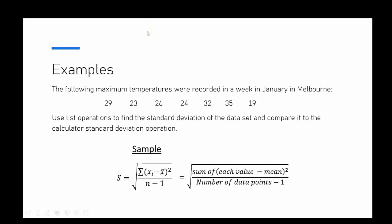Here we've got our example - we're going to look at seven data points, the maximum temperatures recorded in a week in January in Melbourne. We're going to use those data points to find the standard deviation of this set of data. I've picked standard deviation because at school a lot of times you learn how to do it on the calculator but you don't necessarily learn what the calculation actually means and how to actually do it.